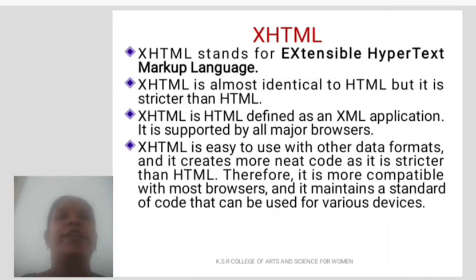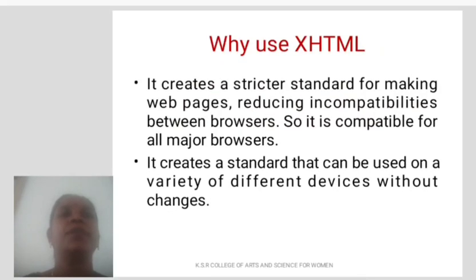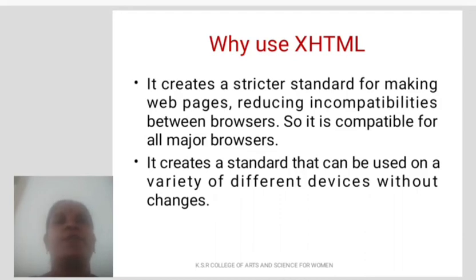Therefore, XHTML is more compatible with most browsers and it maintains a standard of code that can be used for various devices. Why use XHTML? It creates a stricter standard for making web pages, reducing incompatibilities between browsers. So it is compatible with all major browsers. It creates a standard that can be used on a variety of different devices without changes.